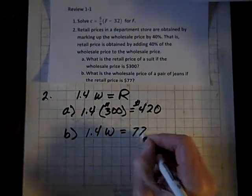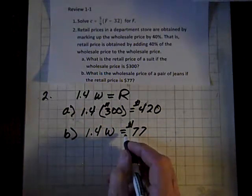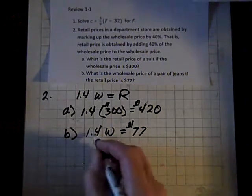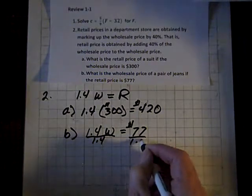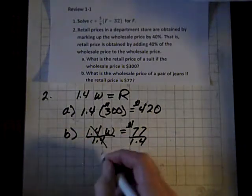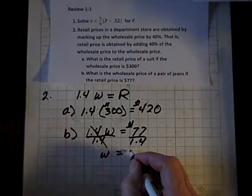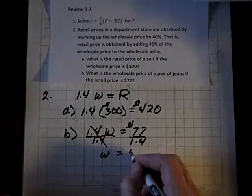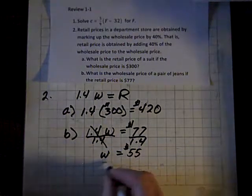So we'll divide both sides by 1.4, and if we do that, these divide out, and we get W equals, and 77 divided by 1.4 is 55 dollars. And we're done.